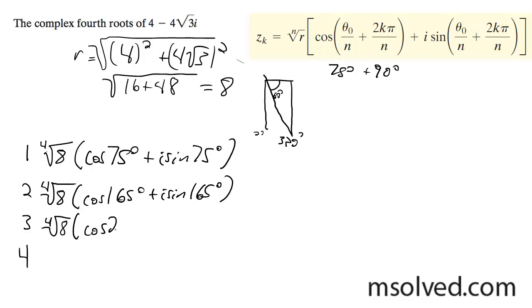Root 3 is fourth root of 8 times cosine of 255 degrees plus i sine of 255 degrees. Root 4 is fourth root of 8 times cosine of 345 degrees plus i sine of 345 degrees. That's it, those are our solutions.